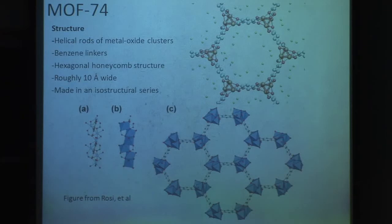This is a unique material that can be made in an isostructural series. You can change the metal used to create the framework while the structure remains virtually identical, allowing you to isolate the effect of metal choice on the absorption of gases.